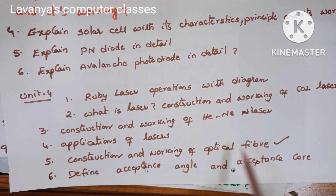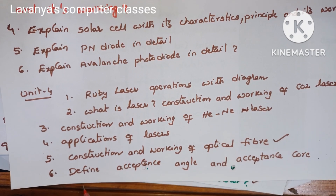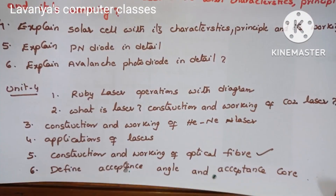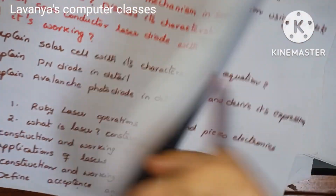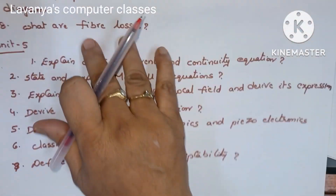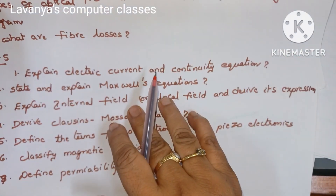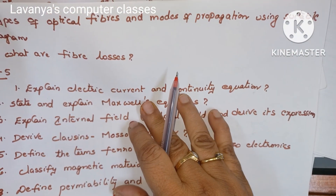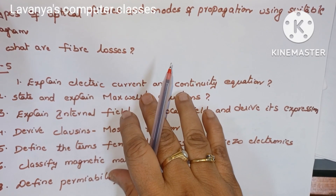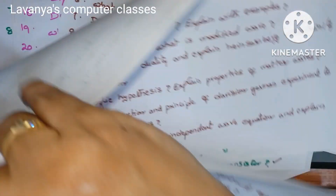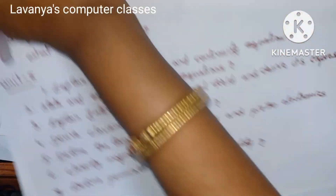Construction and working of optical fiber is a very very important question. Define acceptance angle and numerical aperture. Explain the types of optical fibers and modes of propagation using a suitable diagram, and also cover optical fiber losses. These are the important questions in Unit 4.